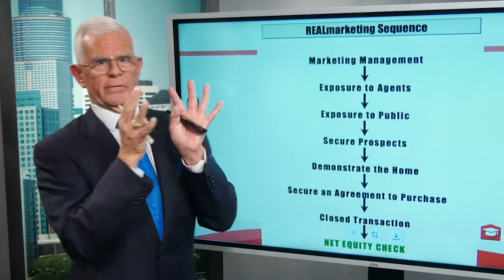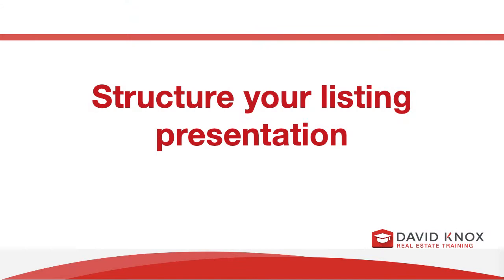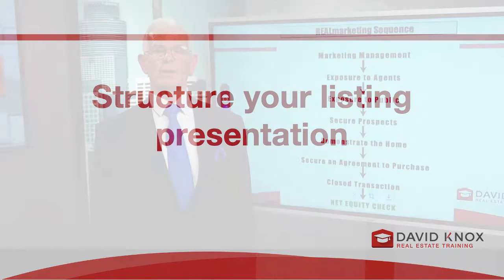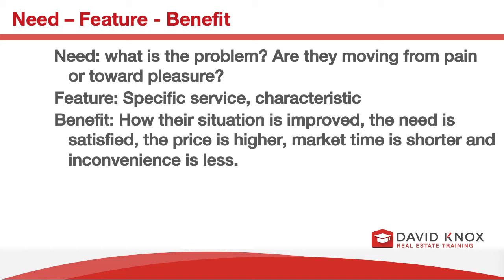And next, fundamental selling — need, feature, benefit presentations. What you do here is talk about, first of all, the need: what is the problem? Are they moving from pain or towards pleasure? And by the way, we have a video on that that you can see. Then the feature is the specific service or characteristic. And then the benefit is how their situation is improved. So remember: you can talk about their needs because you qualify them. You can present all the features of your company. But then you have to present the benefit, which is how is their situation improved? How is the need satisfied? Is the price higher? Is market time shorter? Inconvenience less? Whatever that is, you need to present it.